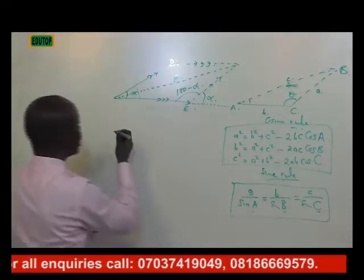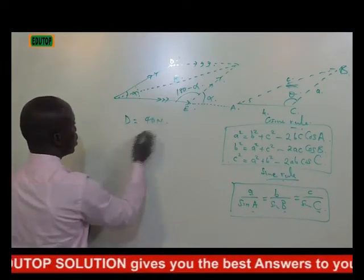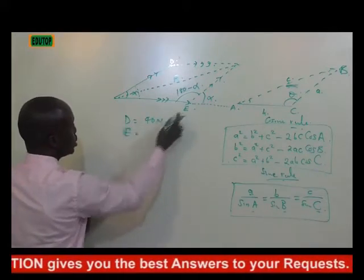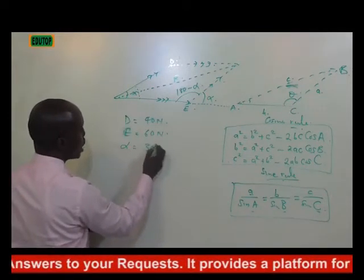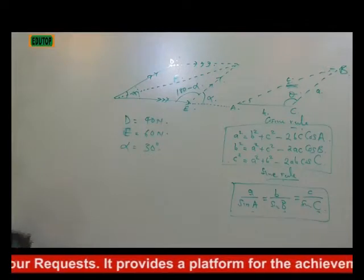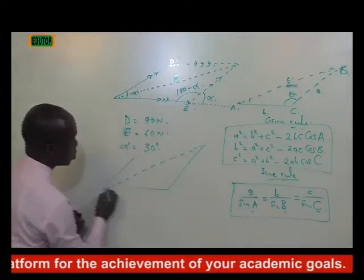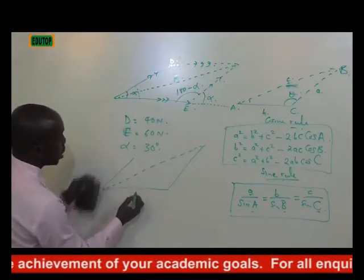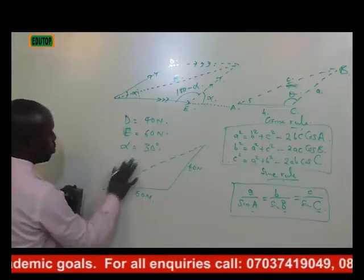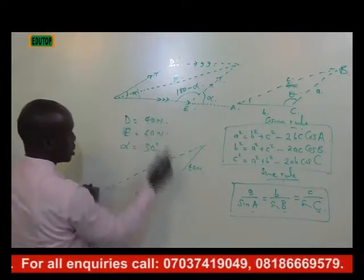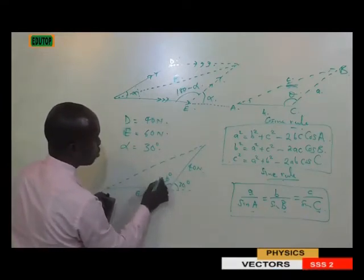Our angle here is 180 minus α. Now if the question says your D is 14 Newtons, the E side is 60 Newtons, and the angle in between them is 30 degrees. How do you proceed? We'll have something like this. Here is 60 Newtons, here is 14 Newtons. This angle here is 30. So if this is 30, this way too will be 30. So automatically this way should be 150 degrees.